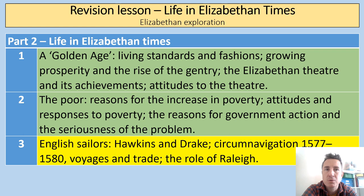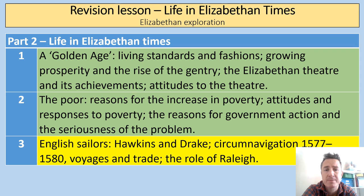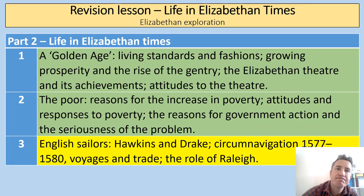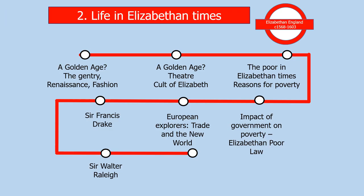We're going to talk about the significance of Francis Drake's circumnavigation of the globe, and how the work of Hawkins and Drake laid the foundations for the Spanish Armada and its defeat in 1588. We're going to look at the impact of these voyages on trade, the privateers and piracy and attacks on Spanish treasure ships, then the role of Walter Raleigh and the case study of the attempts to create a colony in America — the Roanoke colony and the landing at Chesapeake Bay in 1587.